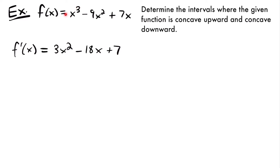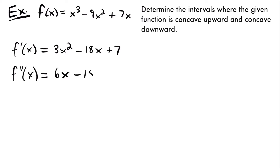We multiplied by 3 and subtracted 1 from our exponent to get 3x squared, multiplied 9 by 2, and then subtracted 1 from this exponent to get 1. And then we just have 7 from 7x. Then we'll take the second derivative, so we'll have f double prime of x, and that's going to be equal to 6x minus 18.